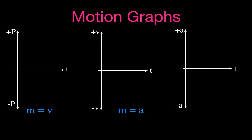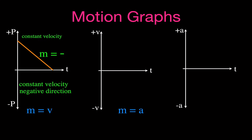The next graph has a straight line with a negative slope — still constant velocity, but moving in the negative direction. We draw the velocity graph in the negative velocity region as a horizontal line. That line still has a slope of zero, so the acceleration is zero as well. All three straight-line cases give zero acceleration because constant velocity means no change in velocity.